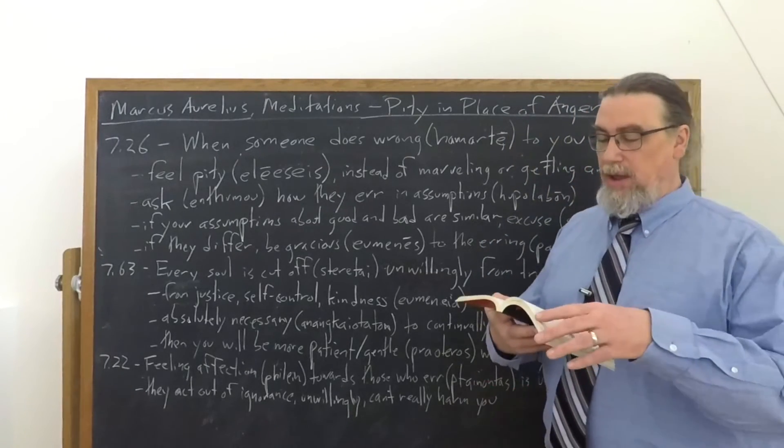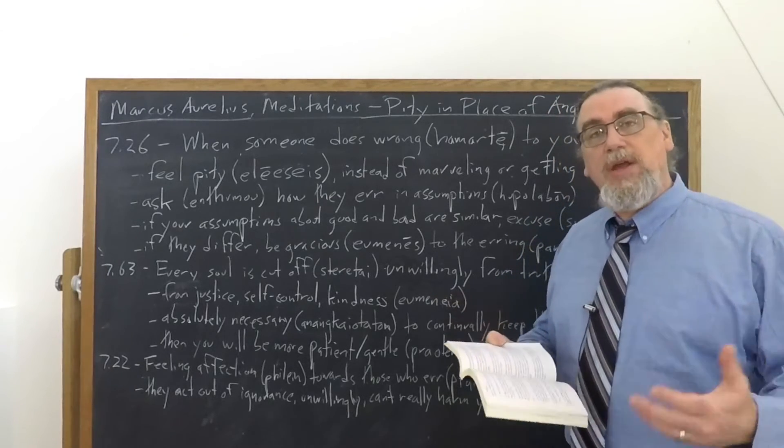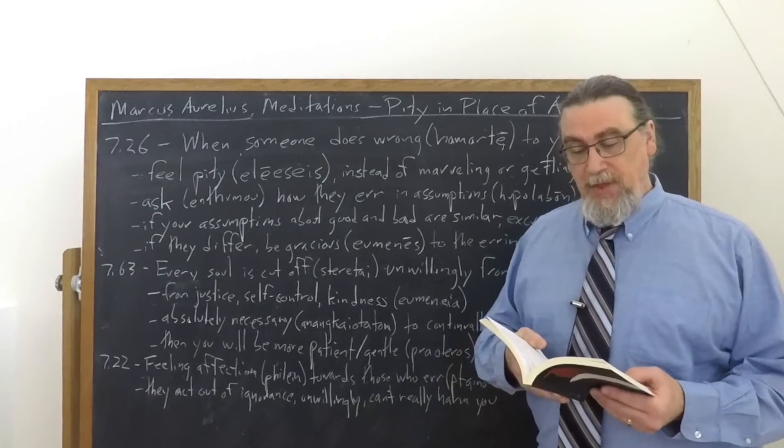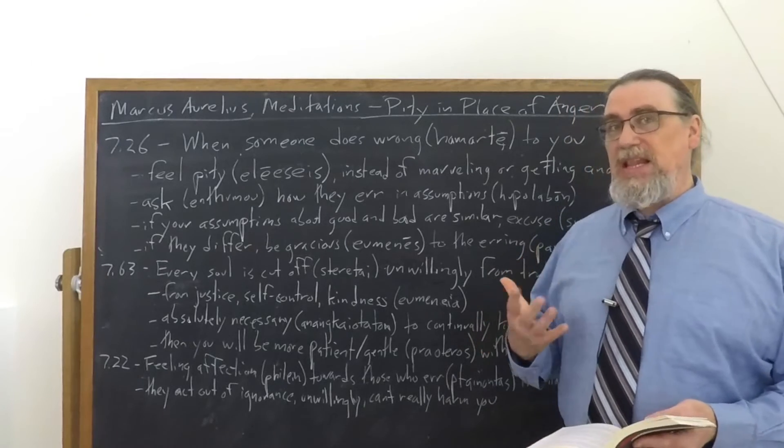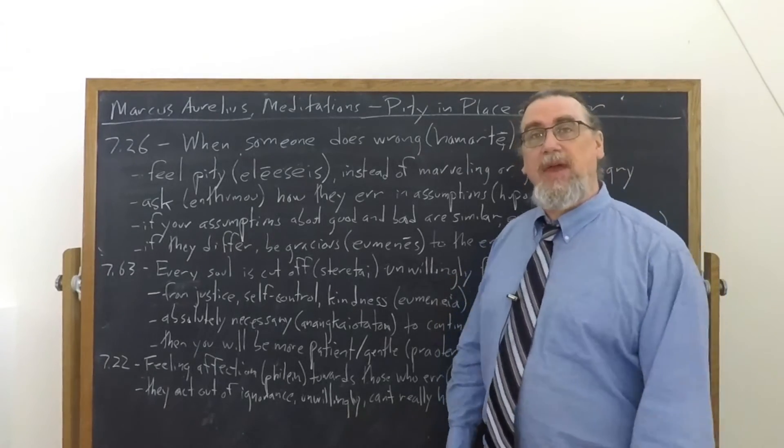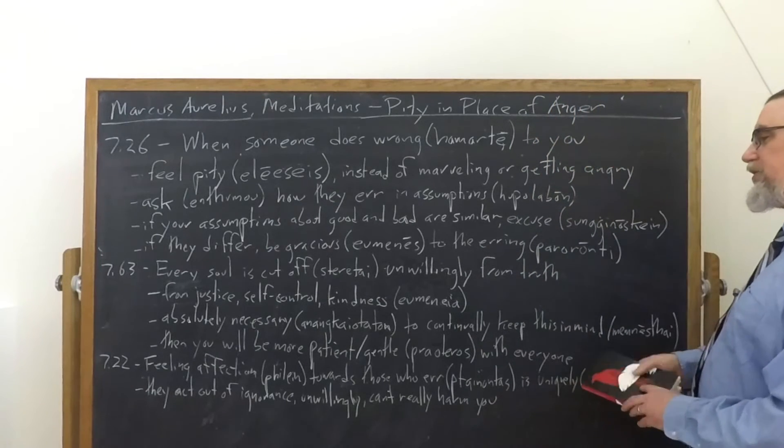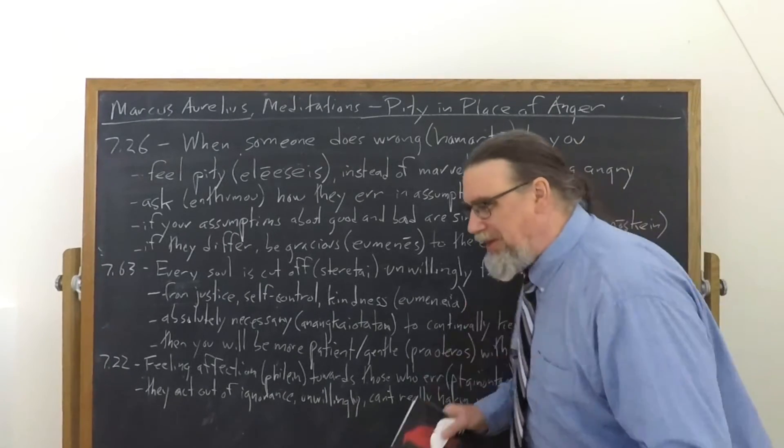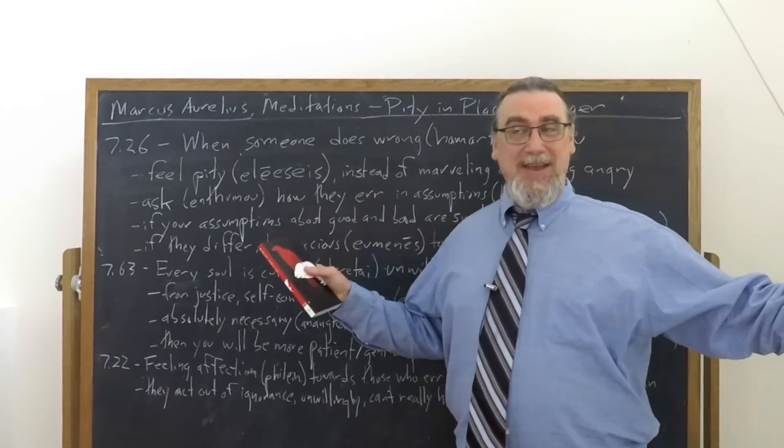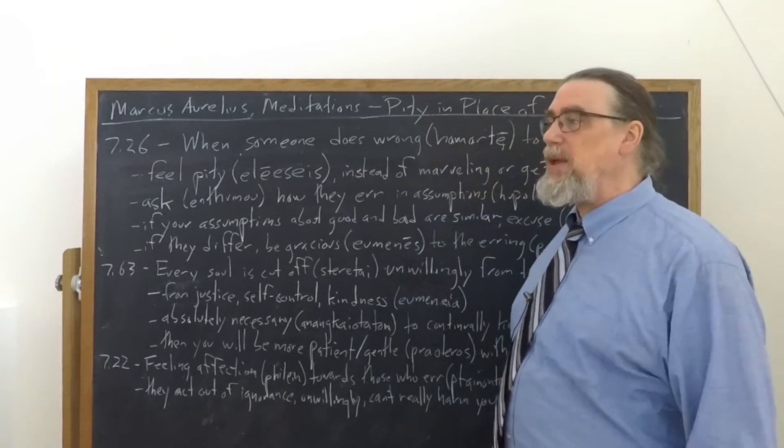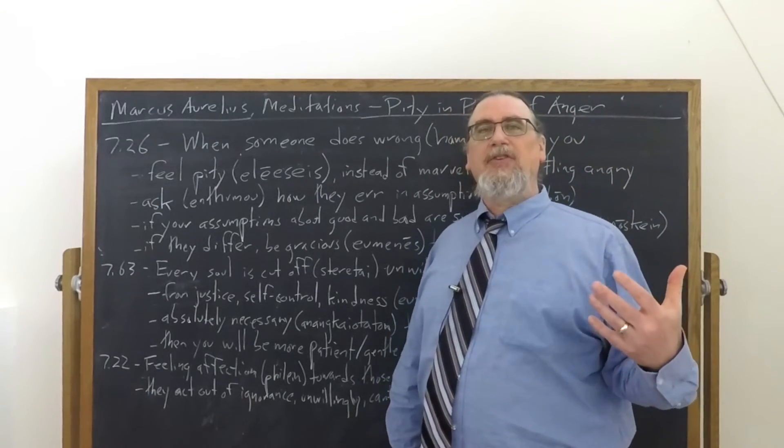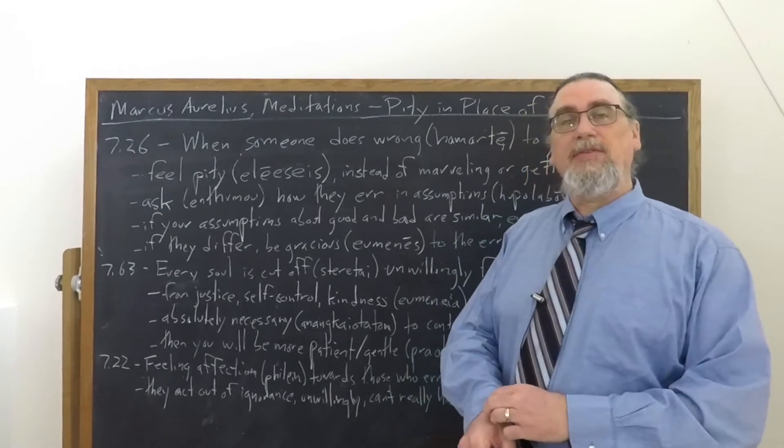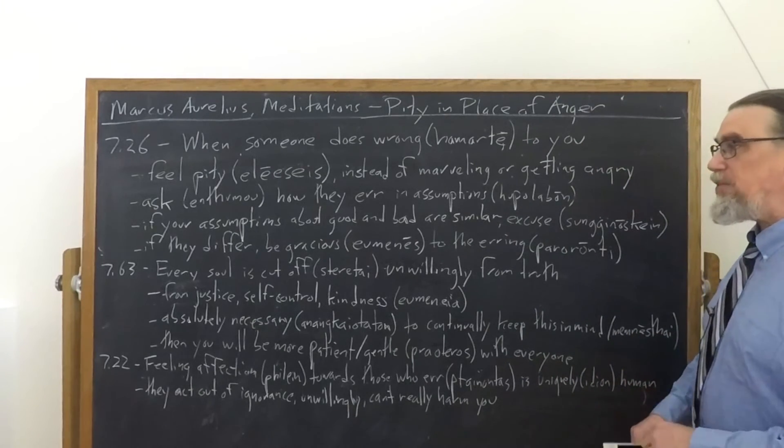There's one other passage that I think is really quite germane to this, where he says, what is uniquely human? What is the idion, the specific thing about human beings, is to feel affection, philene in Greek, for people, even when they make mistakes. And now the word for making mistakes here is quite interesting. It literally means to stumble, like you trip over something. So when people screw up, when they stumble and fall, well, still liking them, still treating them as human beings, is part of what it means to be a human being.